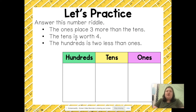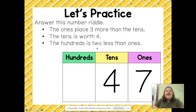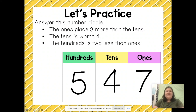Instead of starting at the ones place, I'm going to start with the tens because I know my tens is four. I also know that four plus three means I have a seven in the ones place. Since the hundreds is two less than the ones, I take seven minus two — that's five. My mystery number is 547.